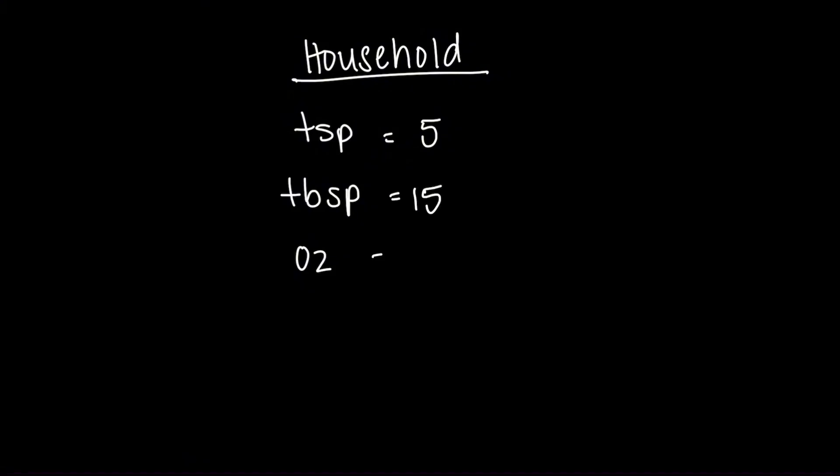Next, we'll have the household measurements. And those are your teaspoons, your tablespoons, and your ounces. So one teaspoon is 5 ml. One tablespoon is 15 ml. One ounce is 30 ml.